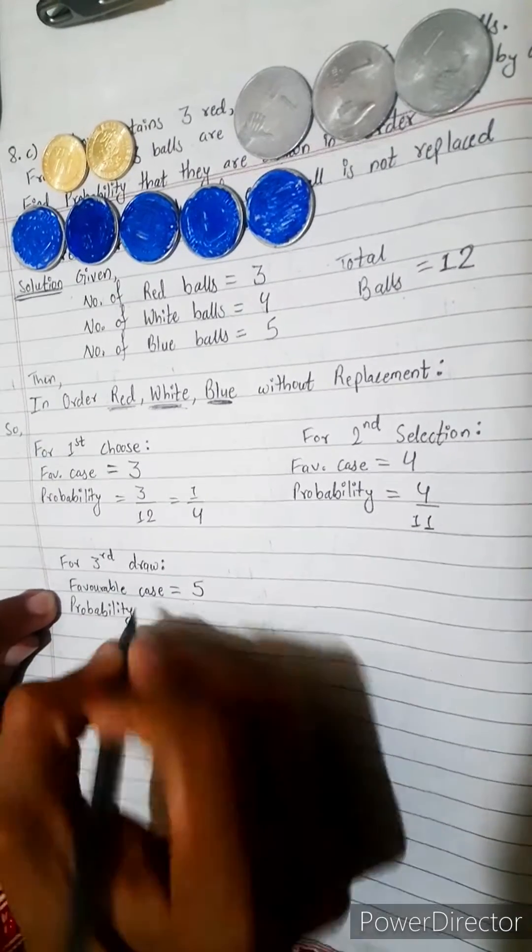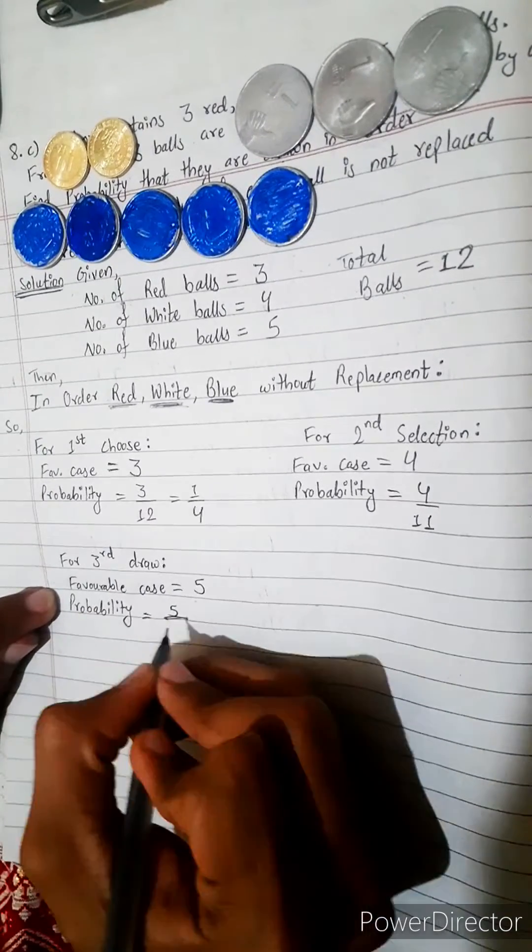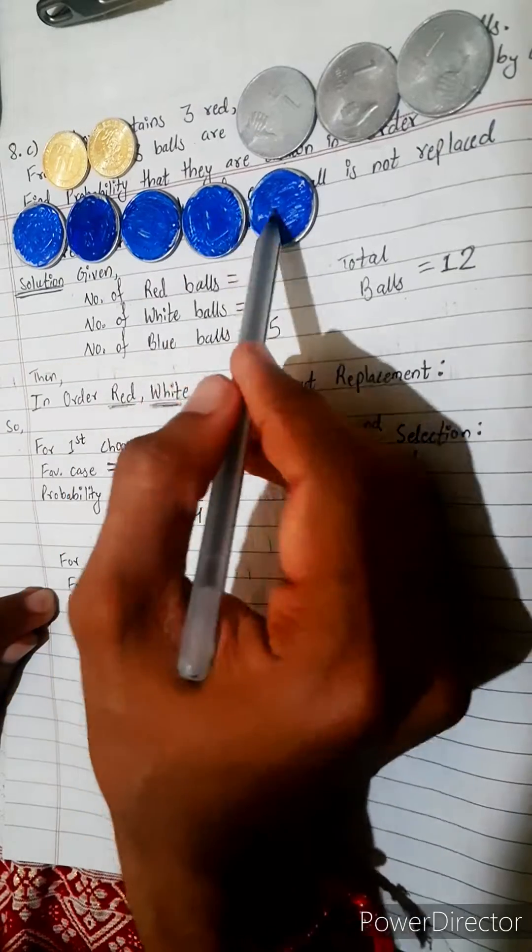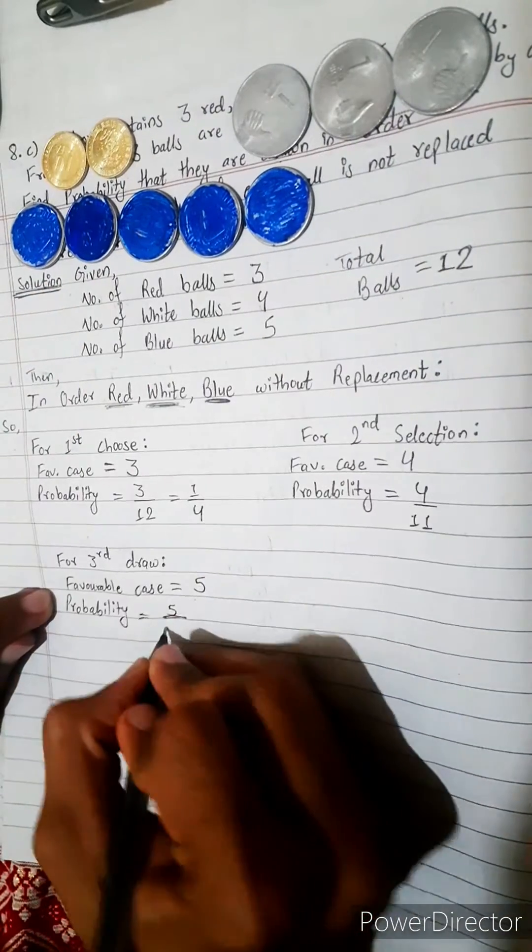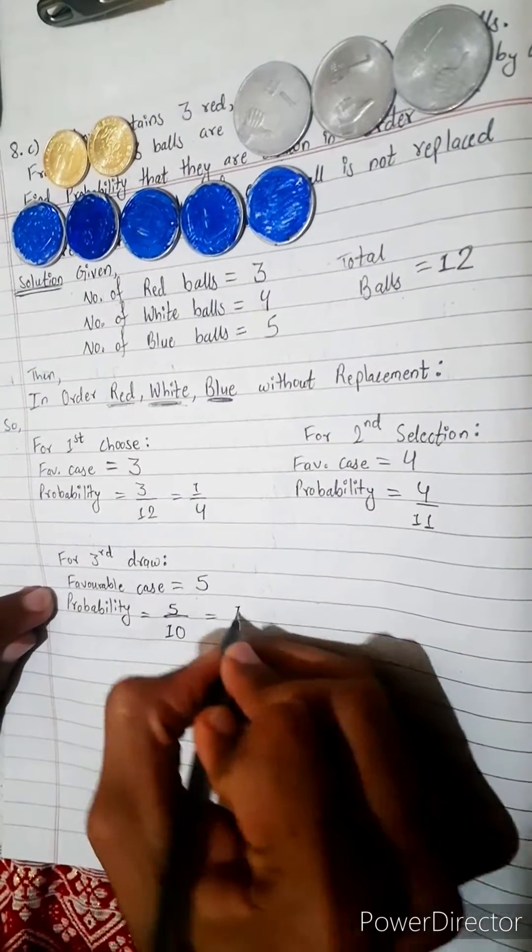What's the probability? Probability equals 5 by total. How many are there total? 1, 2, 3, 4, 5, 6, 7, 8, 9, 10. 5 by 10, which equals 1 by 2.